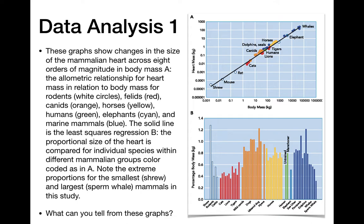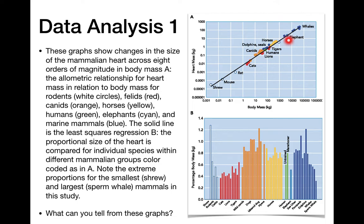We have a different color code here. Rodents are the white circles. Felids — like cats, lions, tigers — are red circles. Canids, which are like dogs, hyenas, and wolves, are orange. Horses are yellow. Humans are green, and we have two humans: an untrained human and a marathon runner. Elephants are a slightly light blue color, and then marine mammals — like whales and dolphins — are the darker blue.